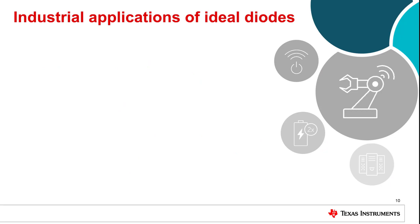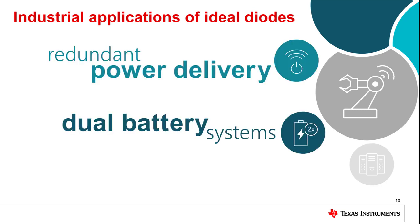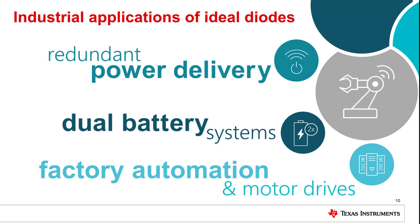Outside the automotive market, industrial applications can also benefit from ideal diodes. Applications include redundant power supplies that require reverse current blocking and systems with paralleled batteries, such as small household appliances. Additionally, ideal diodes excel in factory automation and motor drive applications to protect against miswiring with their reverse polarity protection feature.